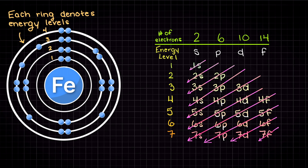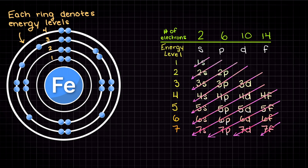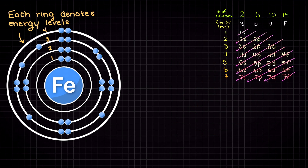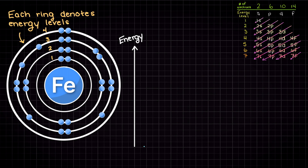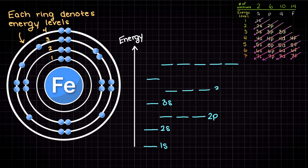The further we move away from the center, the higher energy level we are at. Now let's work out our electron configuration of iron. We'll begin with the 1s subshell, and as we discussed before, the 1s subshell can hold 2 electrons. So that leaves us with 24 electrons left.